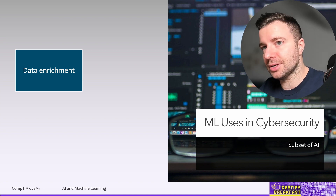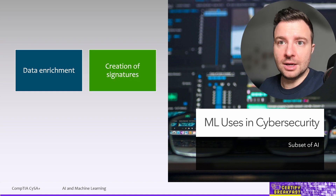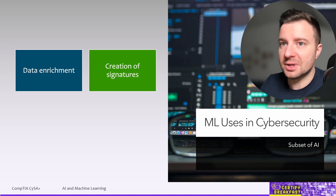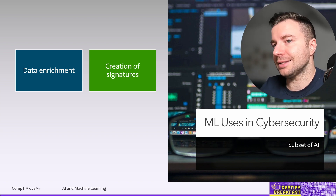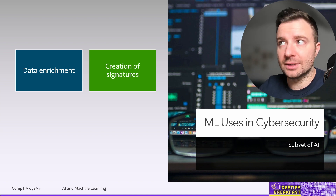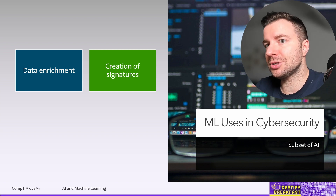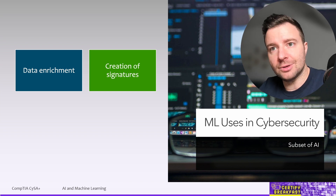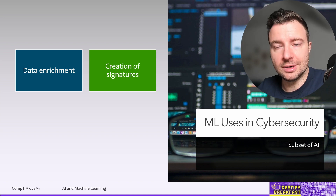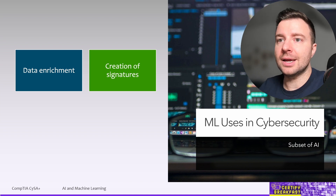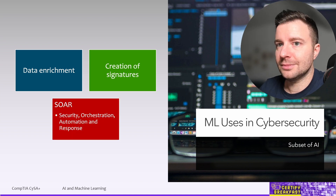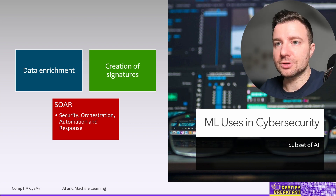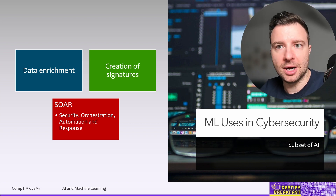Being able to understand that something is suspicious in the network or inside a workstation is the first step in understanding malware behavior and creating new signatures. This is where machine learning helps tremendously, as it is able to define or refine a signature based on observed current and historical behaviors.